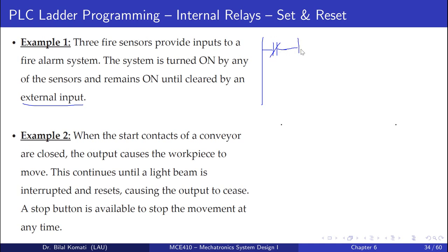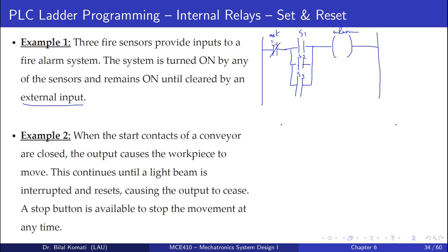We have three sensors S1, S2, S3 in parallel — any one activates the alarm. The external input is used to reset the alarm system. But since the alarm should remain on even if all sensors turn off, we add a latching contact for the alarm output. This satisfies the objective of the example.